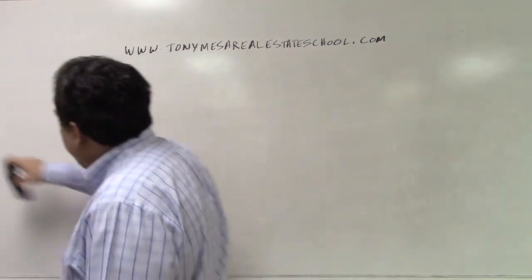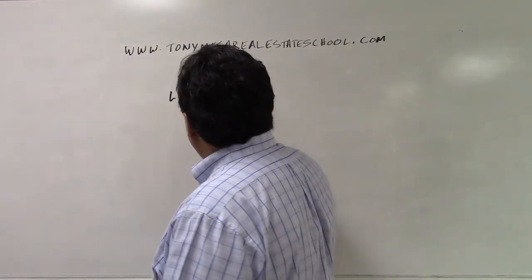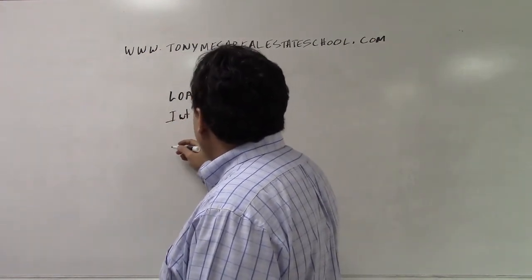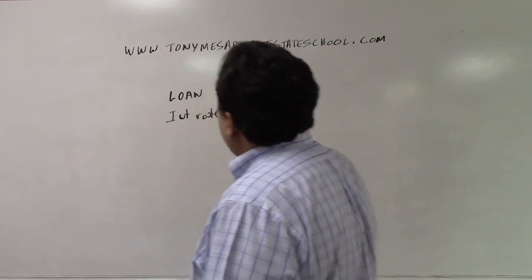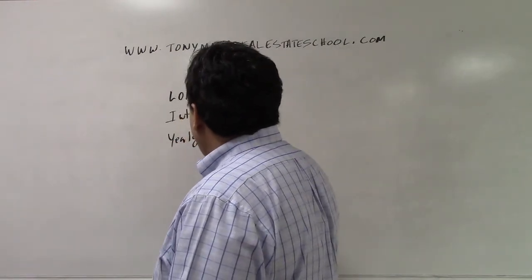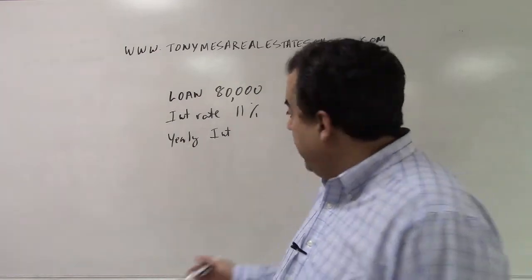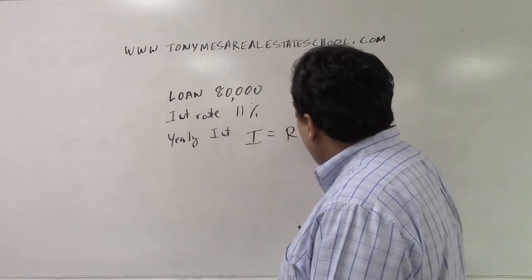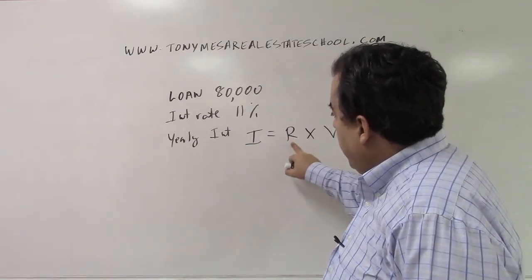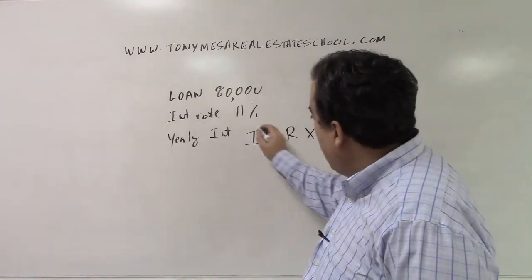Now for Irv the Banker. Say you have a loan of $80,000 and an interest rate of 11%, and you're asked to calculate the yearly interest on this loan. Since we're dealing with a loan, it's Irv the Banker. I write down I = R × V, where I is the yearly interest, R is the interest rate as a decimal, and V is the loan value. Here, I is already alone on one side.